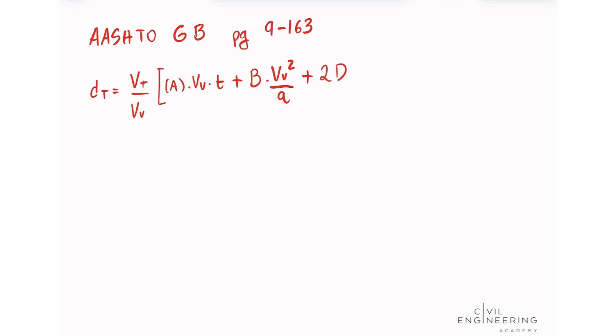Plus 2d, where d is the distance from the stop line or front of the vehicle to the nearest rail, which is assumed to be 15 feet. Everything I'm saying is in our AASHTO green book on page 9-163. Plus L, the length of the vehicle, assumed to be 73.5. Plus W, the distance between the outer rails. For a single track, this value is 5 feet.